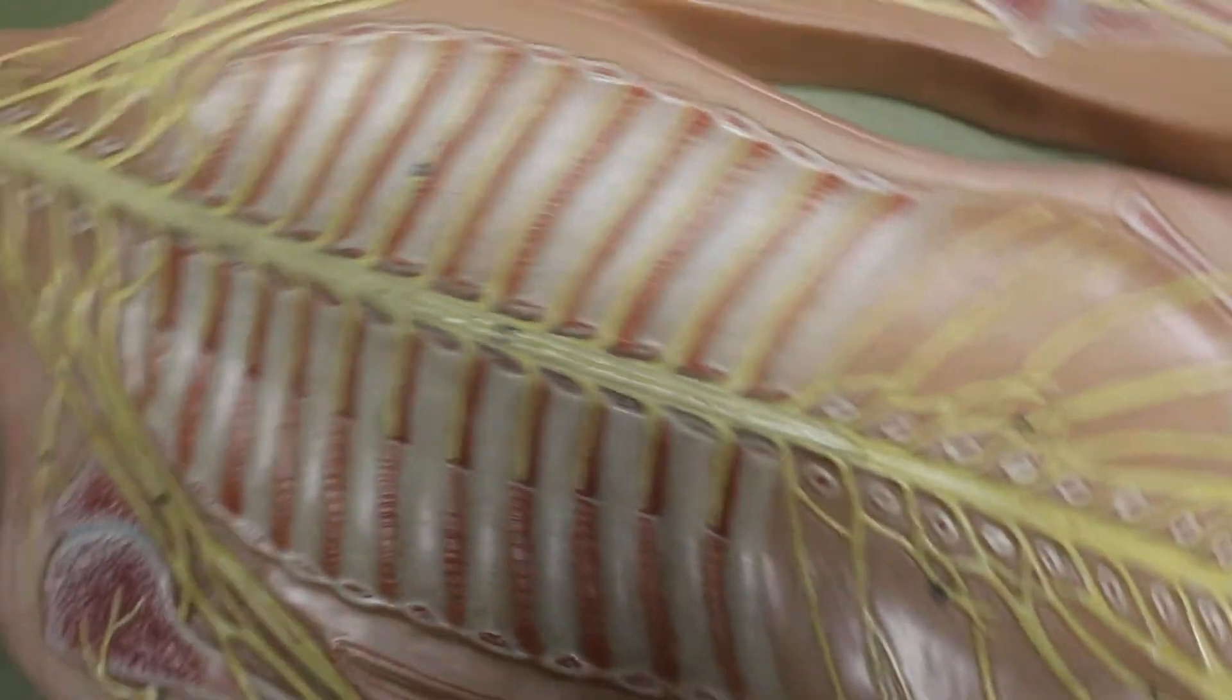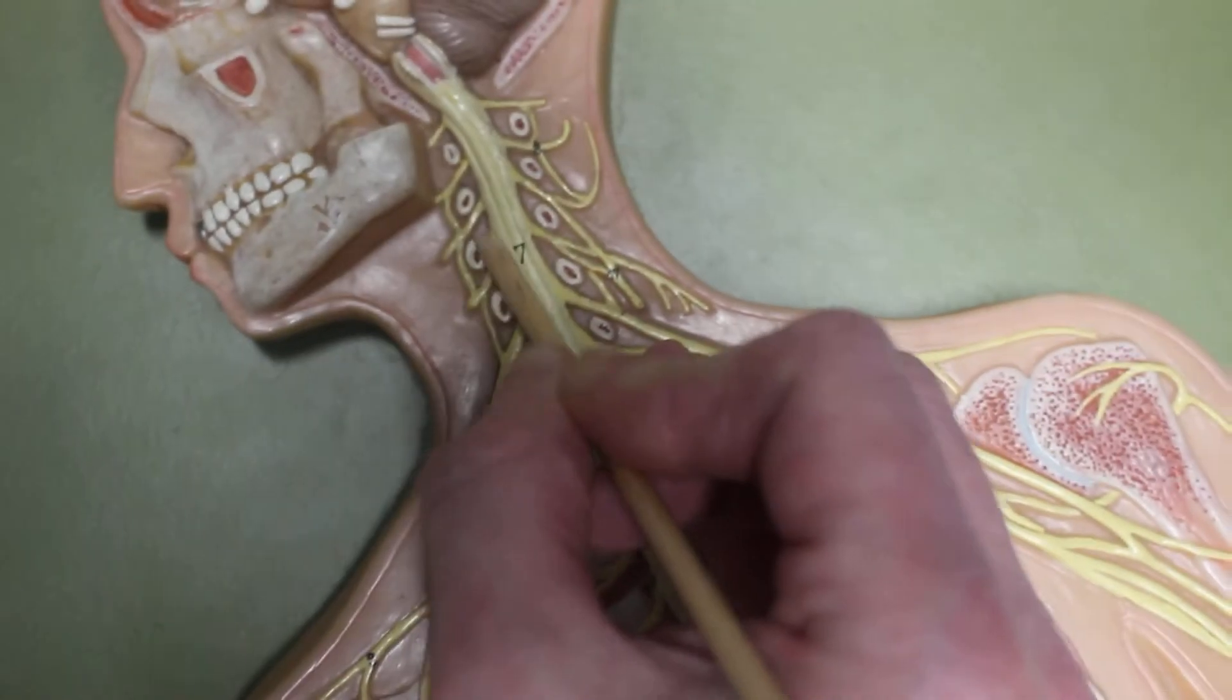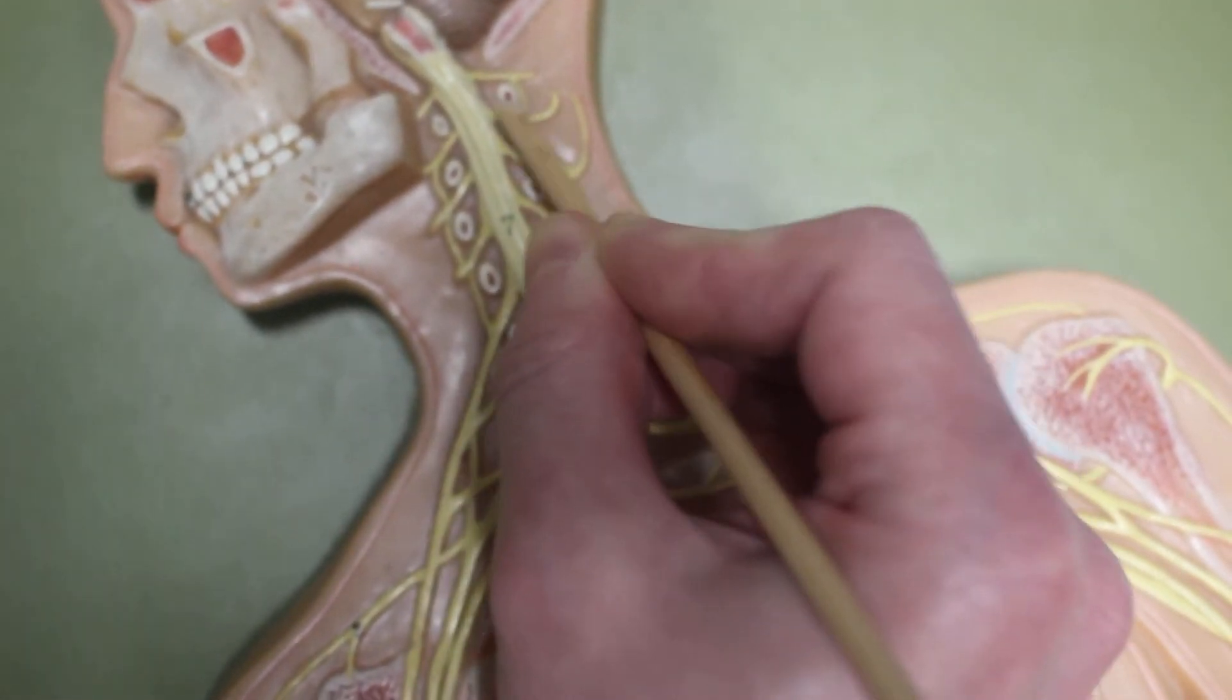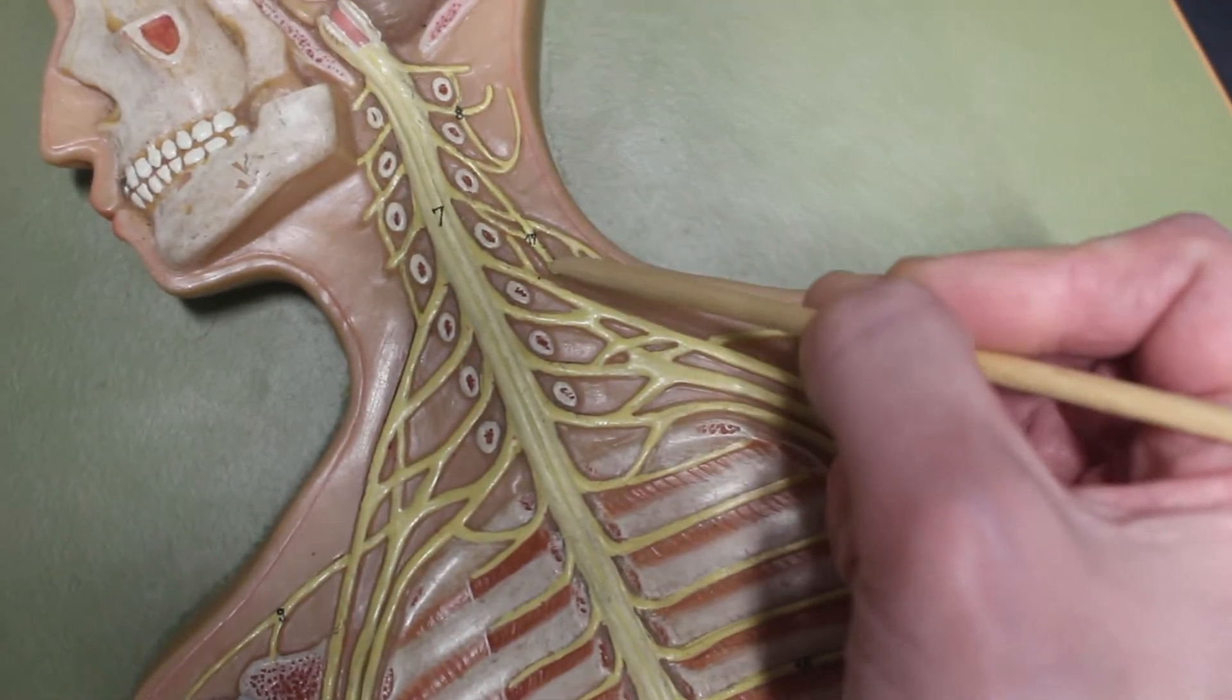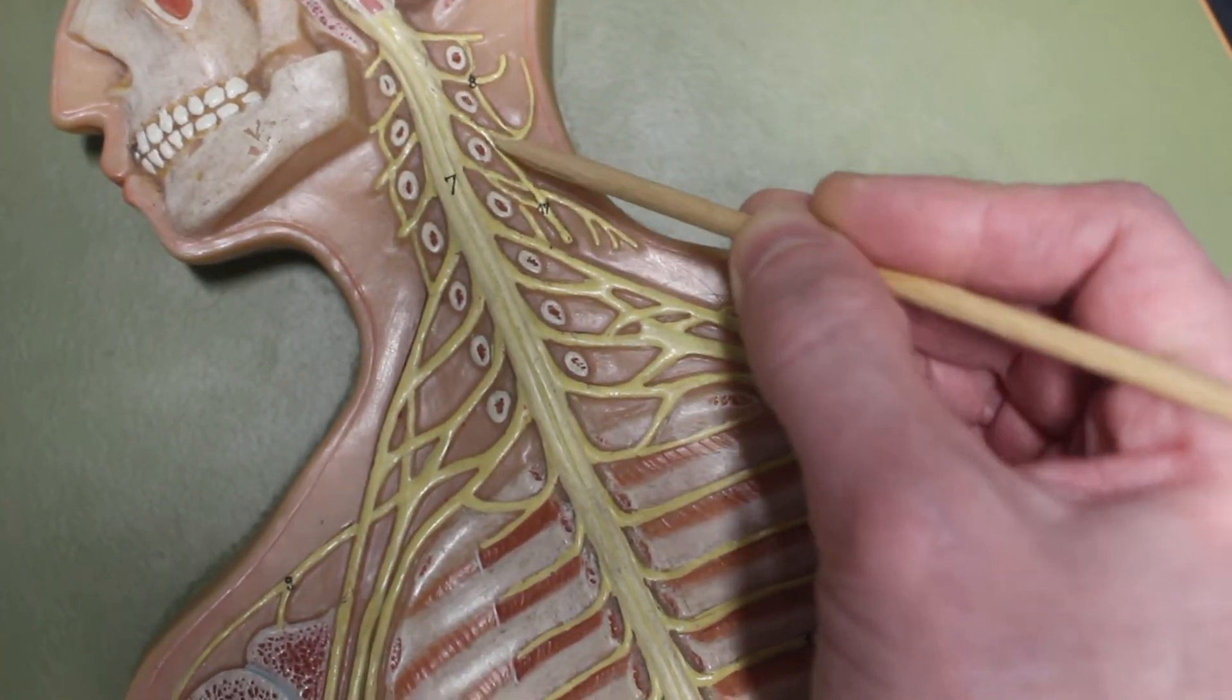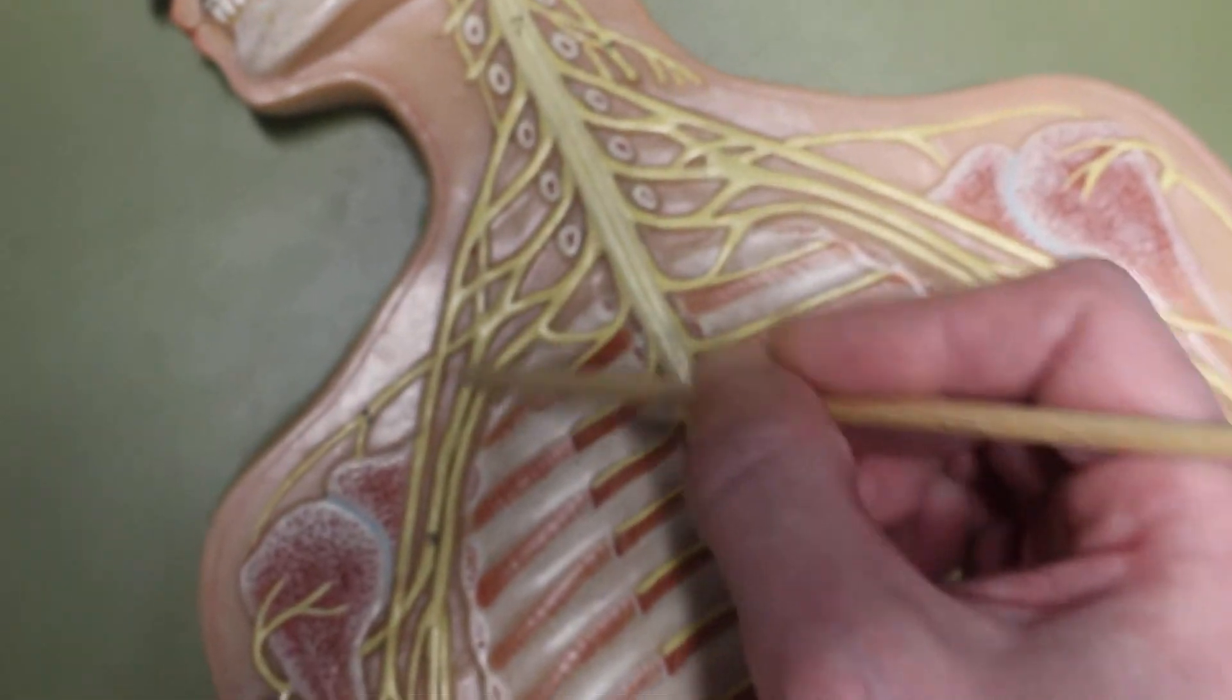Then we have the various nerves. The nerves coming off in the cervical region, each one of these is a cervical nerve. Then where they come and intertwine here, this is the cervical plexus. Down here is the brachial plexus, so right and left brachial plexus.